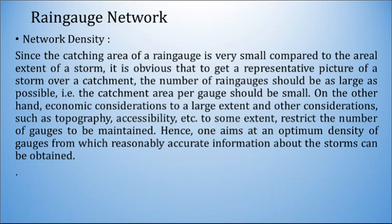On the other hand, economic considerations to a large extent and other considerations such as topography, accessibility in case of hilly areas, etc., to some extent restrict the number of gauges to be maintained. Hence one aims at an optimum density of gauges from which reasonably accurate information about storms can be obtained. We should have optimum density of rain gauges so that we will get adequate results.